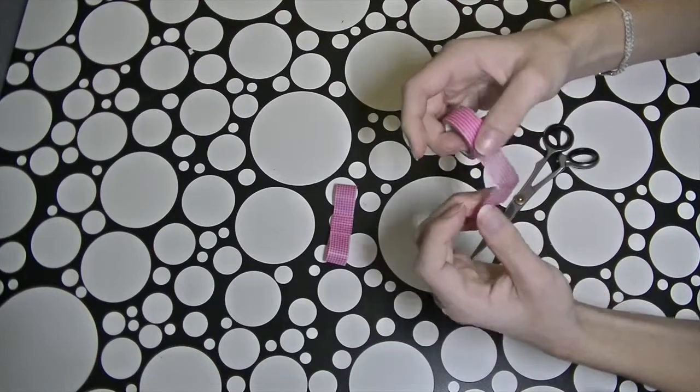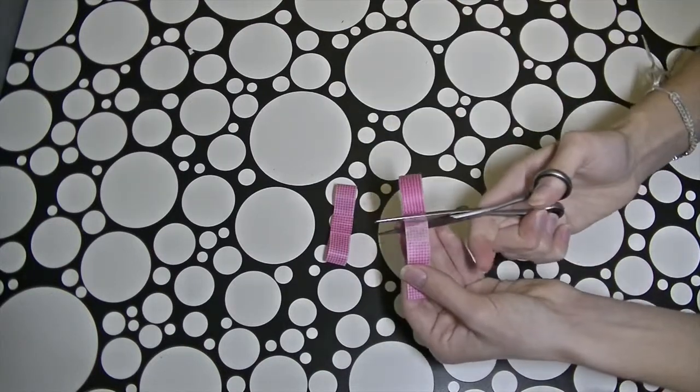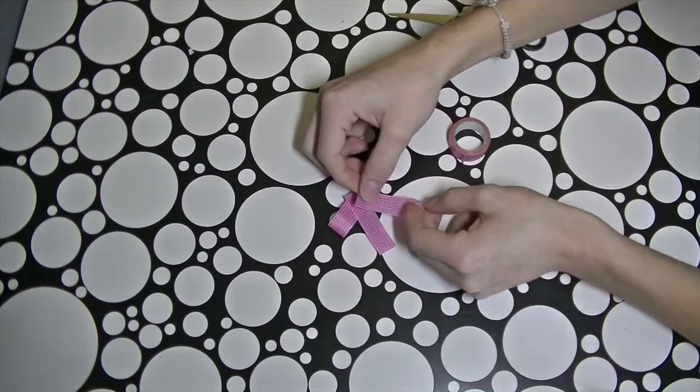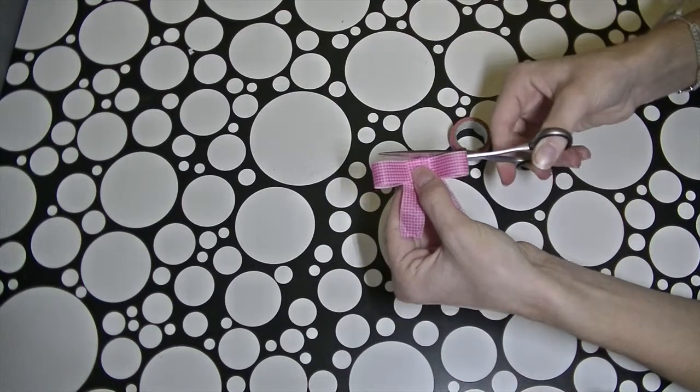Then you're going to make these two stripes again but with a bit of the sticky sides overhanging. Stick this to the back of your bow and then cut the edges.